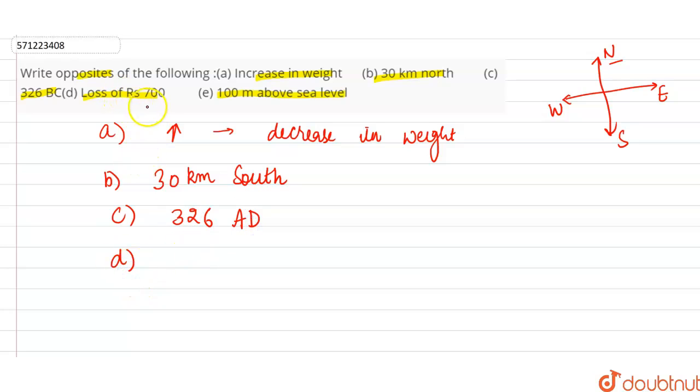Part D: loss of rupees 700. The opposite is gain of rupees 700.